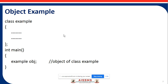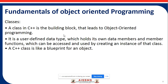Here is an example of an object. First, we declare the class 'Example' with a curly bracket, and the code is provided by the user. Then in the main function, an object of class Example is created.